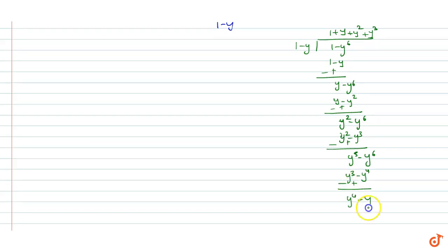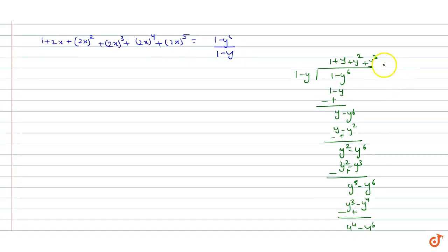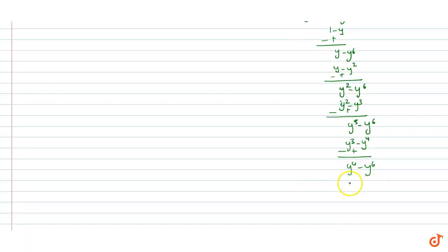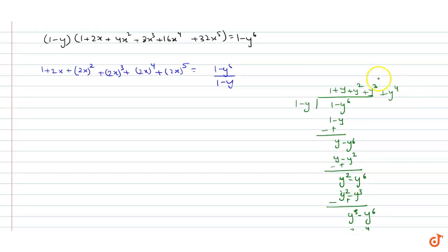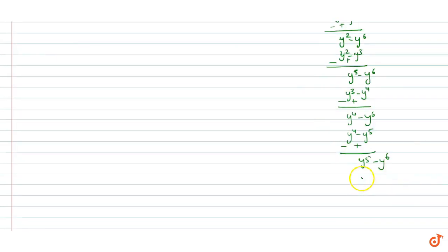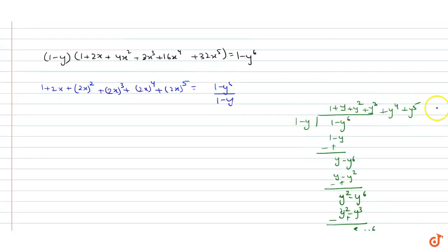We get 1 plus y to the power 4 minus y to the power 6. Here we go: plus y to the power 4, that is y to the power 4 minus y to the power 5. We have subtracted, so y to the power 5 minus y to the power 6. Then we will put more y to the power 5, and y to the power 5 plus minus is equal to 0.